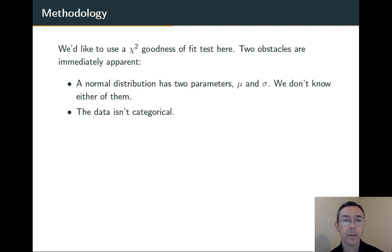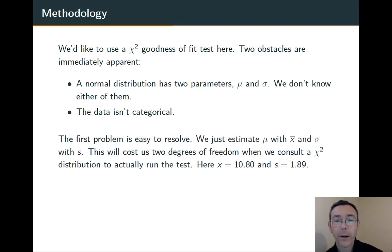Instead of having a table with counts, we have just a list of values that, in theory, come from a continuous distribution. So, the first problem is not a big deal at all. We take those parameters and we estimate them with sample data. We recognize that it's going to cost us two degrees of freedom when we eventually run our significance test. But other than that, it doesn't make a particular difference to us.